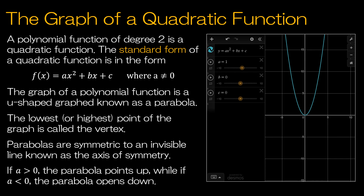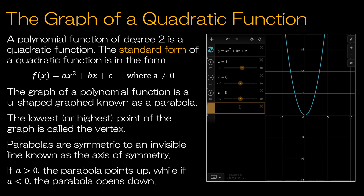Let's talk about what the graph looks like. The graph of a quadratic function is a U-shaped graph known as a parabola, as you can see on the screen. The lowest or highest point is called the vertex. So here, when b is 0 and c is 0 — really just y = x² — the vertex is going to be at (0, 0). Parabolas are symmetric to an invisible line known as the axis of symmetry. In this case, the axis of symmetry is x = 0.